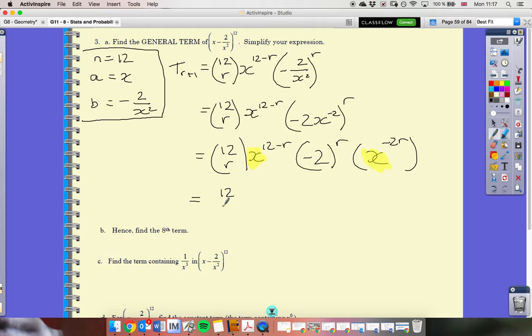I'm going to keep 12 to the power of r there. I'm then going to combine these x's. So, 12 minus r, I've got to add on negative 2r because I'm multiplying with the same base. And then I've still got this negative 2 to the power of r.